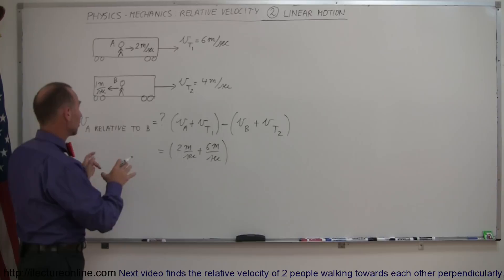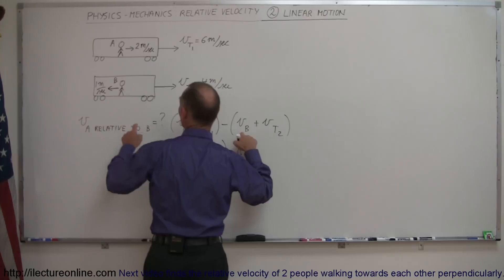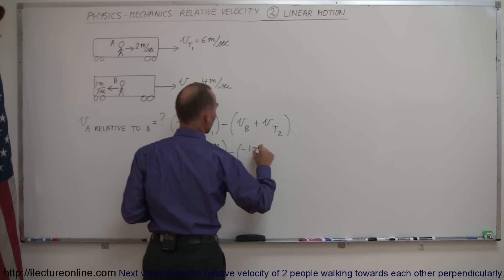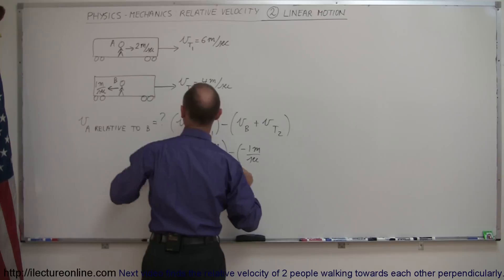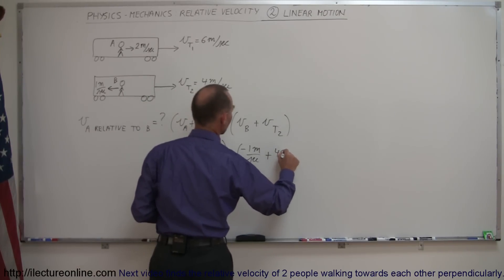But because the second train is moving and observer B is moving, this will not be the case. So we subtract from that the velocity of B, which is to the left at 1 meter per second—that makes it minus 1 meter per second—and we add to that the velocity of train 2, which is to the right at 4 meters per second.